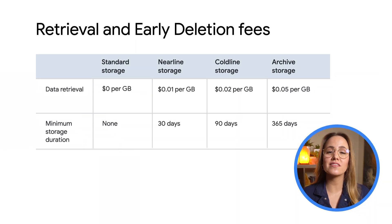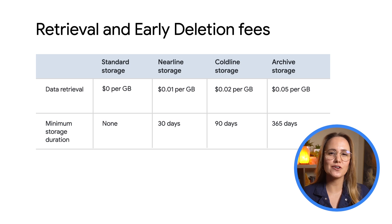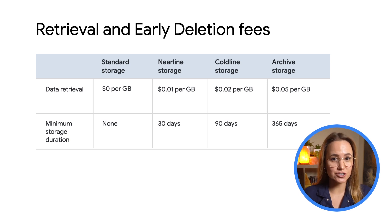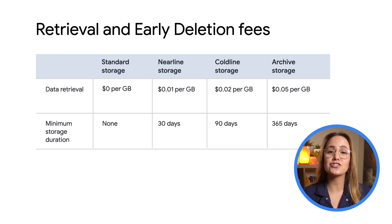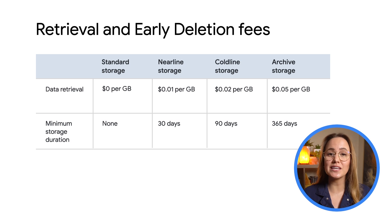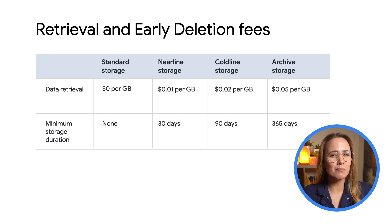For standard storage, the monthly cost is the only cost you need to plan for. However, with the other three storage types, you'll want to consider the minimum duration of that data as well as any retrieval costs. For example, coldline storage has a minimum storage duration of 90 days and a retrieval cost of, say, two pennies. So the cheaper monthly cost is completely worth it if you only want to access this data about twice a year. If, however, you find yourself accessing or updating the data every week, you'll end up spending more money than if you had selected standard storage to begin with.